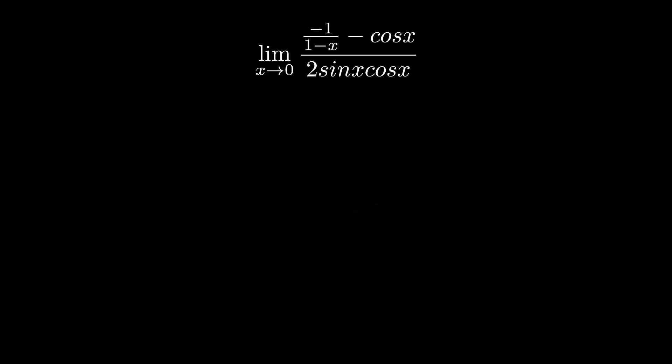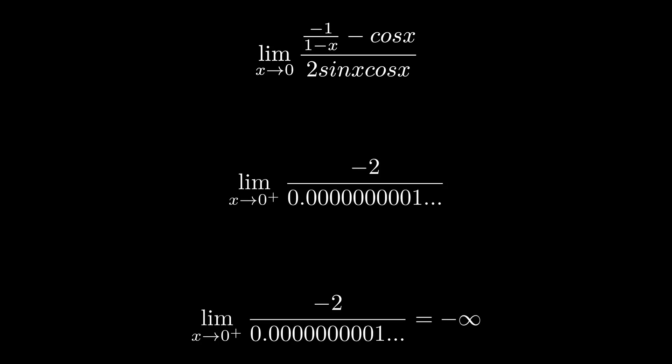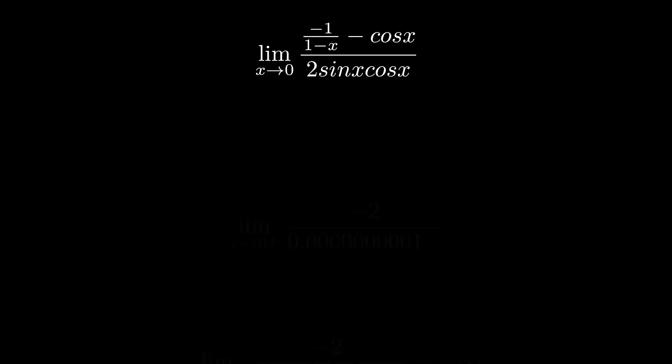If we take a one-sided limit from the right, it would also be like dividing negative 2 by an infinitesimally small fraction. However, this fraction would be positive. This would be equal to negative infinity. Now, since the limit from the left does not equal the limit from the right, we can get Katie Herron's state championship winning answer. The limit does not exist.